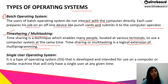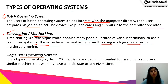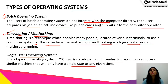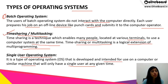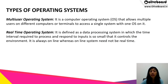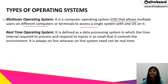The third is single user operating system. This is an operating system developed and intended for use on a computer that will have only a single user at a given time — only the assigned person will be able to use that operating system. Next is multi-user operating system, which allows multiple users on different computers to access a single system with one operating system only.